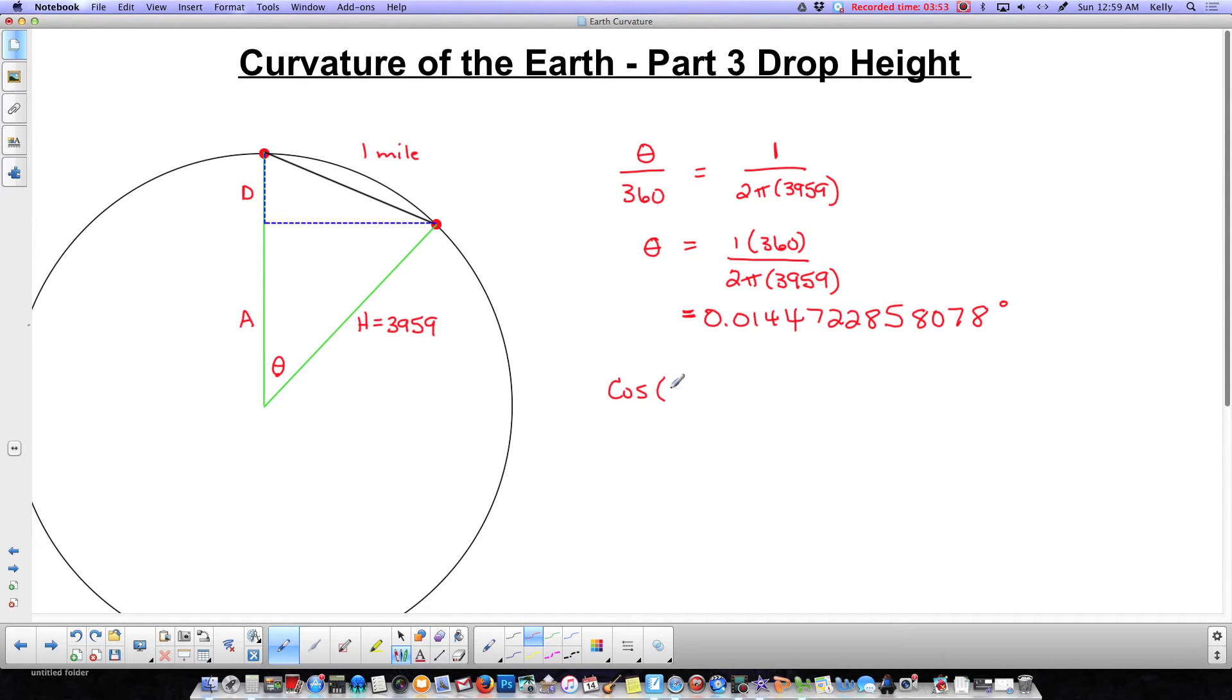Cos of, I'm going to round it to 0.01447. That is going to equal the adjacent side, our a that we're trying to find, divided by the hypotenuse, which is 3959 in miles. And to get a by itself, I'm going to multiply both sides by the 3959.